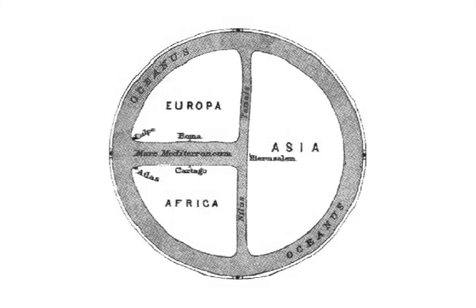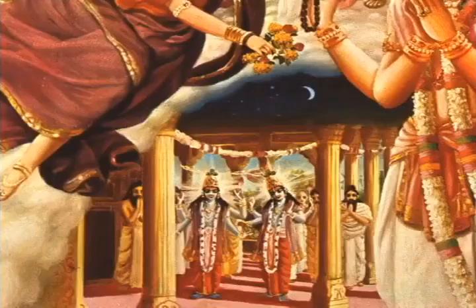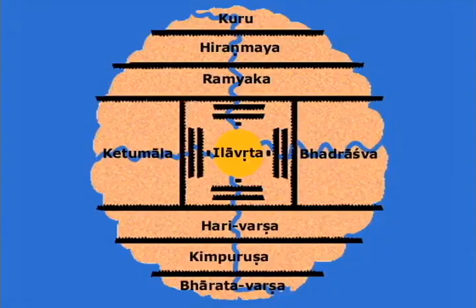Bhumandala as a map of the celestial realm of the demigods. Bhumandala can also be understood as a map of the celestial realm of the demigods. One curious feature of Jambudvip is that the Bhagavatam describes all of the Varshas, or regions, other than Bharata Varsha, as heavenly realms, where the inhabitants live for 10,000 years without suffering.